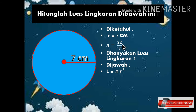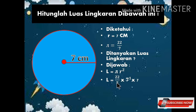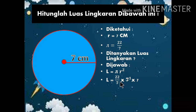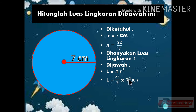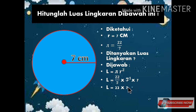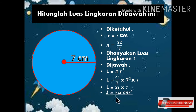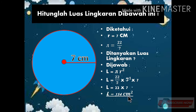Kita masukkan ke dalam rumus: luas lingkaran = π × R². π = 22/7, R = 7, jadi luas lingkaran = 22/7 × 7 × 7. Kenapa 7 dua kali? Karena R pangkat 2. Kita sederhanakan: 7 dibagi 7 sama dengan 1, sehingga 22 × 1 × 7 = 22 × 7. Hasilnya adalah 154 cm². Mudah sekali, bukan?